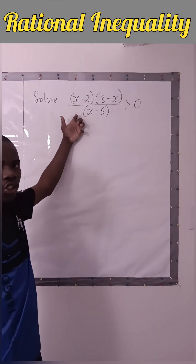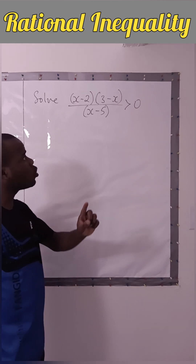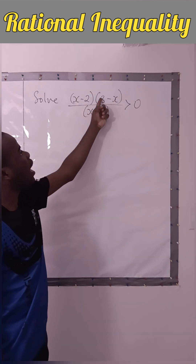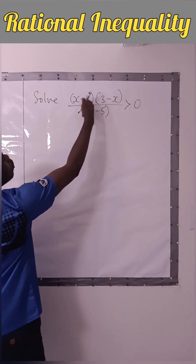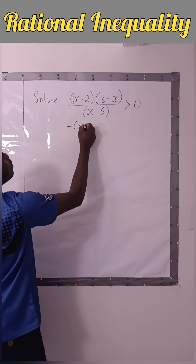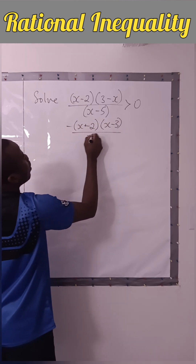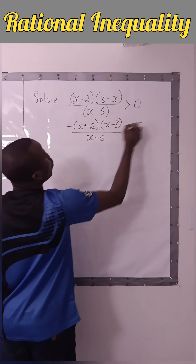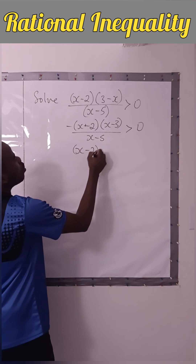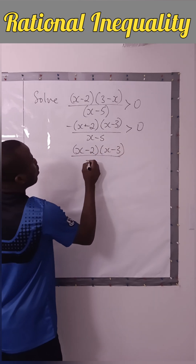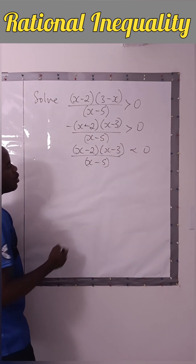To solve this rational inequality we can use the wavy curve method. We'll ensure that the x's are on the fixed side, so if we factorize minus one from here we'll have minus (x minus 2)(x minus 3) over (x minus 5) greater than zero. Multiplying both sides by minus one gives (x minus 2)(x minus 3) over (x minus 5) less than zero.